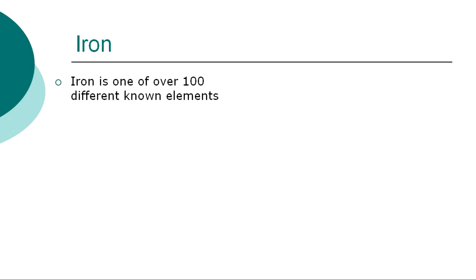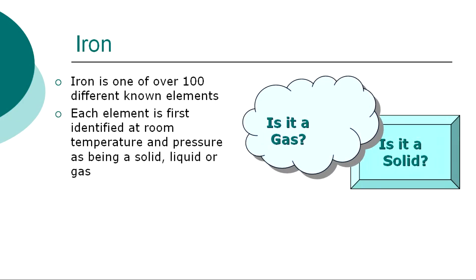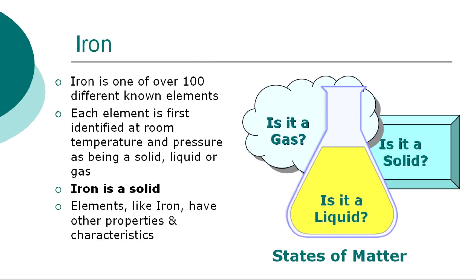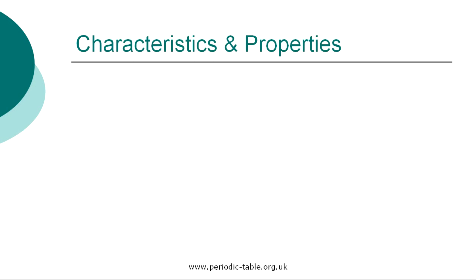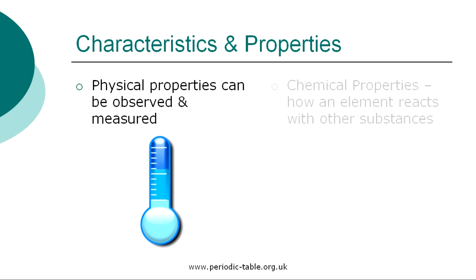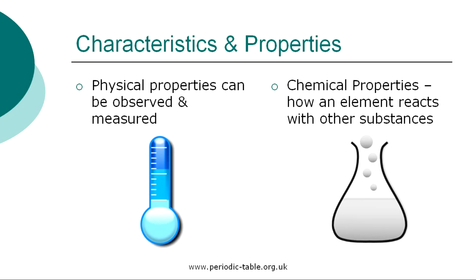The element iron is one of over 100 different chemical elements that are known to modern chemistry. Each element is first identified at room temperature and pressure as being a solid, liquid, or gas, referred to as states of matter. Iron is a solid at normal room temperature and pressure. Each element has physical properties that can be observed and measured, such as color, density, and odor. The chemical properties are the characteristics that determine how a substance will react with other substances, such as water or oxygen.